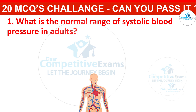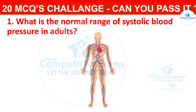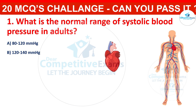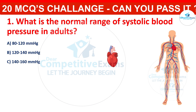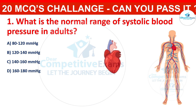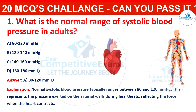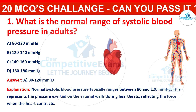What is the normal range of systolic blood pressure in adults? Your options are 80-120 mmHg, 120-140 mmHg, 140-160 mmHg, or 160-180 mmHg. The correct answer is 80-120 mmHg. The normal systolic blood pressure typically ranges between 80-120 mmHg, representing the pressure exerted on the arterial walls during heartbeats, reflecting the force when the heart contracts.